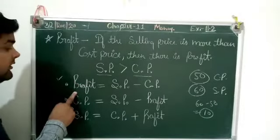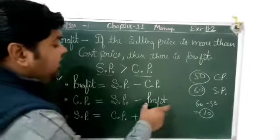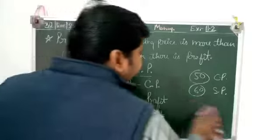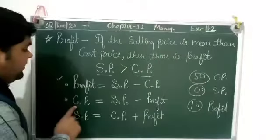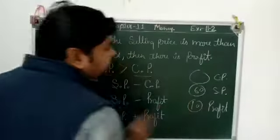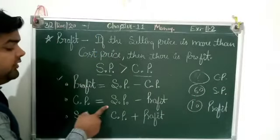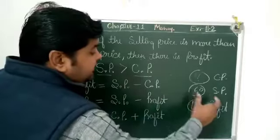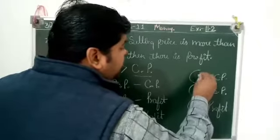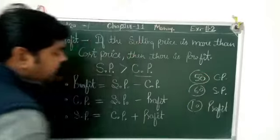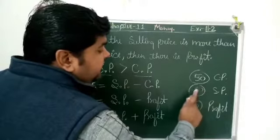Now the formula for finding profit is established. Suppose CP is missing — SP is given and profit is given. For example, SP is 60 and profit is 10, so CP = SP minus Profit, which gives 60 minus 10 equals 50. Also, SP = CP plus Profit. If you want to find SP, then SP equals CP plus Profit.